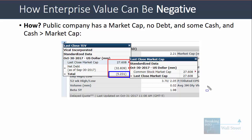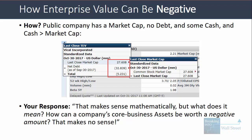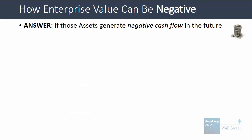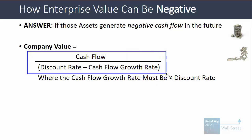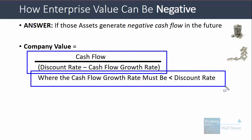You might think this makes sense mathematically, but what does it actually mean? How can a company's core business assets be worth a negative amount? The answer is: if those assets generate negative cash flow into the future, then yes, they could easily be worth a negative amount — especially if the company never turns around and keeps generating negative cash flow.